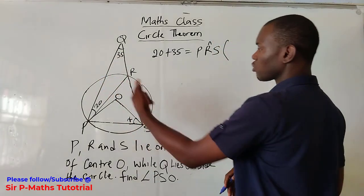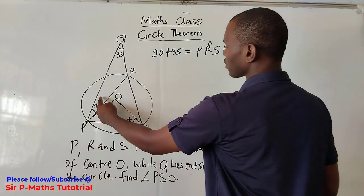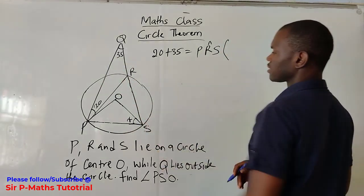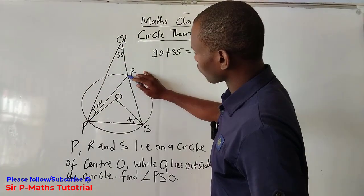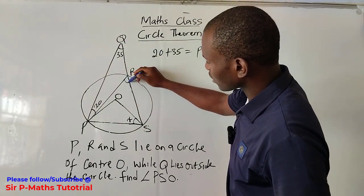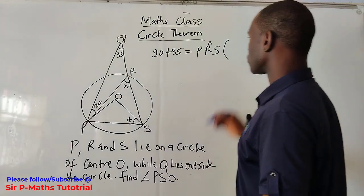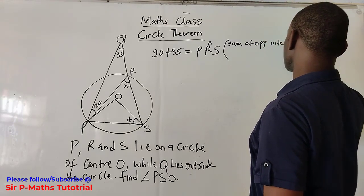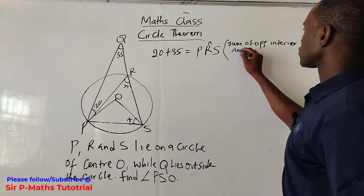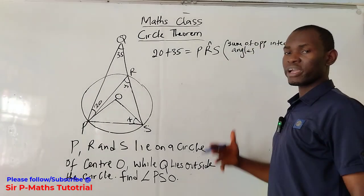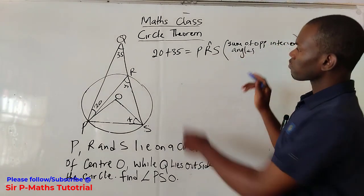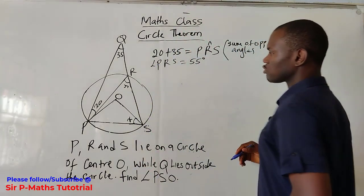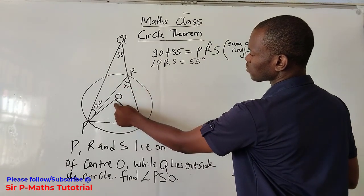The reason is: the sum of two opposite interior angles is equal to the exterior angle in a triangle. You have two angles opposite to an exterior angle; if you add both of them you get the angle at the outside. So angle PRS is equal to 55 degrees.